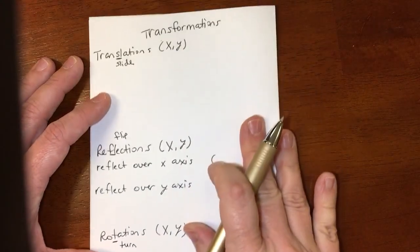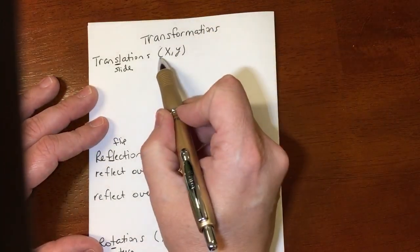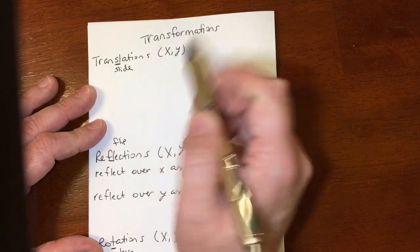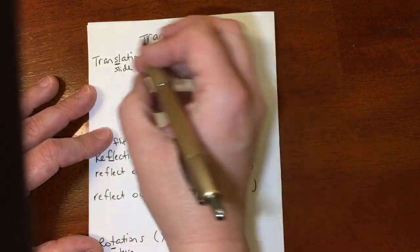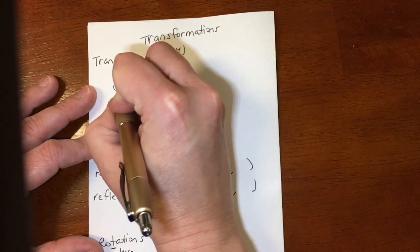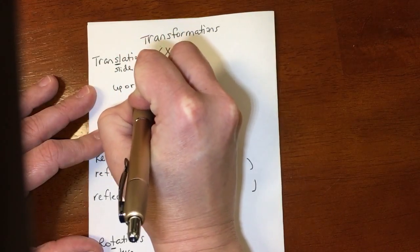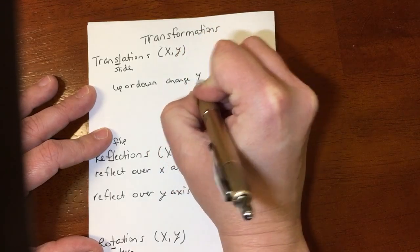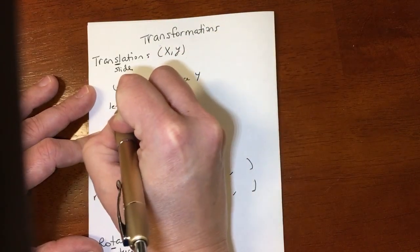Alright, with a translation, we start off with any ordered pair (X,Y). And as they transform, the X and the Y change. So if I want to go up or down, I'm going to change the Y. And if I want to go left or right,